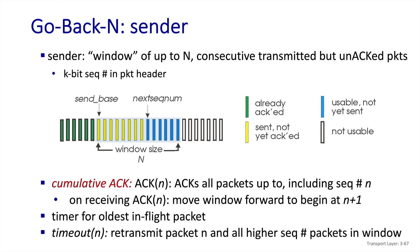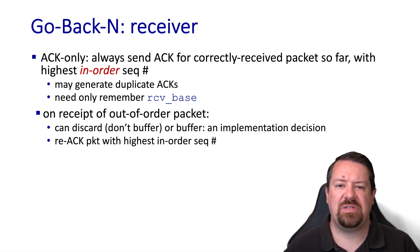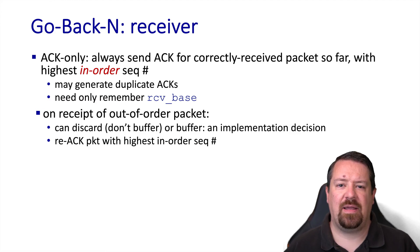With the go-back-n algorithm, we use a cumulative ACK, so the ACK acknowledges all packets up to that sequence number. When one of these ACKs arrives, the window moves forward to the n+1 position. The sender must maintain a timer for the oldest in-flight packet, and if the acknowledgement doesn't arrive, it retransmits. If that timeout happens, the sender goes back n — all the way to the beginning of its window — and starts retransmitting packets in order. On the receiver side, ACKs are sent for the highest sequence number received in order. Out-of-order packets may be discarded, since the sender will retransmit them, though the receiver could also choose to buffer them.